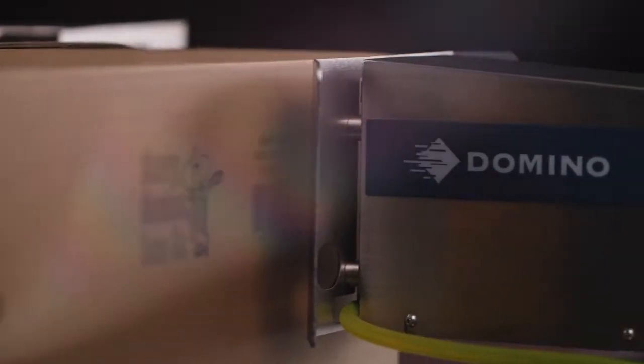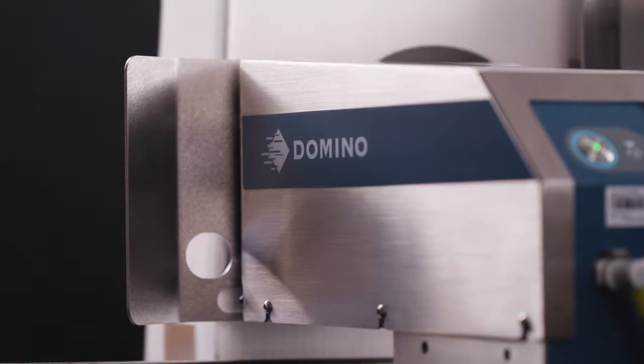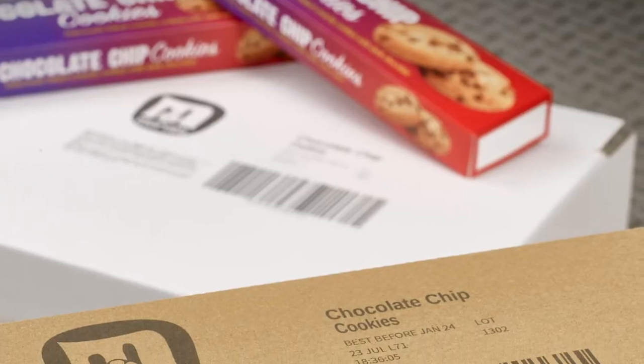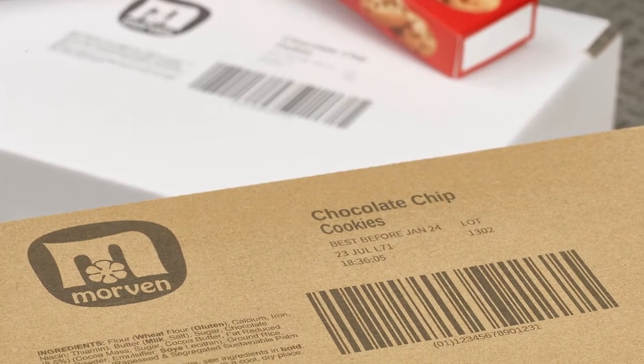Print up to 260mm in height or onto multiple sides of a box from a single CX350i controller. And with the addition of an inline barcode scanner, you can ensure each code is perfect every time.